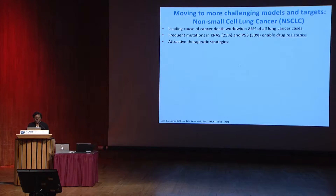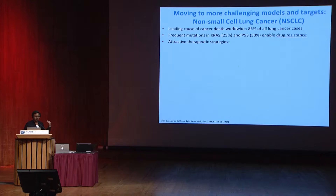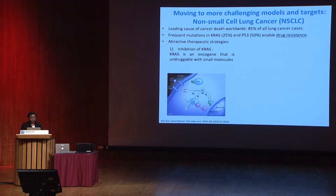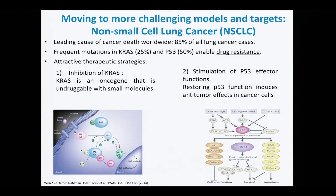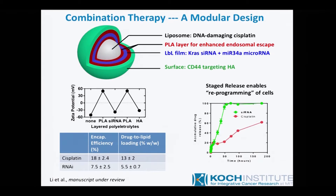This meant we had to look at a more difficult challenge and a more meaningful model. We went to Tyler Jacks' lab and learned about his KP mouse model, which is a model of non-small cell lung cancer—a particularly aggressive form with one of the frequent mutations found in lung cancer, KRAS. KRAS is interesting because it's an oncogene that is not druggable with small molecules due to the nature of its binding pocket. This model also has a loss of p53, the guardian gene, and we want to restore some of that p53 effector function. So we looked at a combination of siRNA against KRAS and miR-34A microRNA that would replace the p53 function.